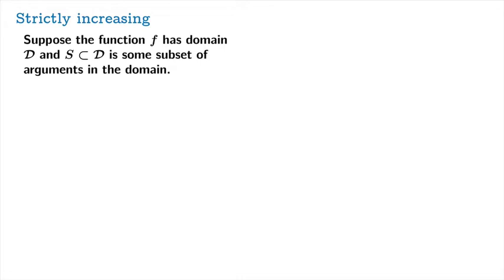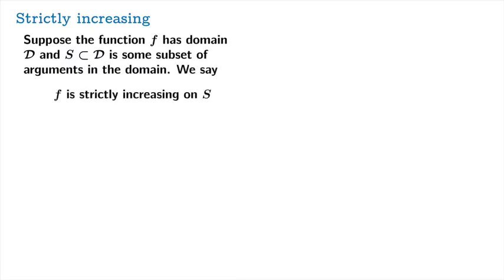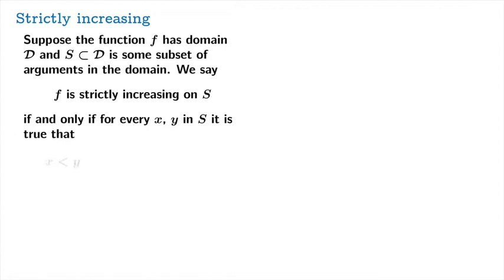So first, let's talk about strictly increasing. Suppose the function f has domain d, and s is some subset of arguments in the domain. We want the option to focus our attention on some subset of the domain — we don't necessarily want to talk about the behavior on the whole domain. We say that f is strictly increasing on s if and only if for every x, y in s, x less than y implies f of x is less than f of y.